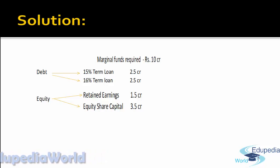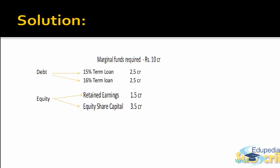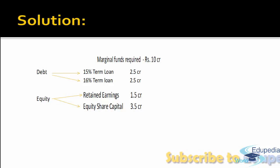Step 2 is to compute the specific cost of capital for each source of finance. Cost of debt 1 (15% term loan) will be 9%. Cost of debt 2, that is the 16% term loan, will be 9.6%. Retained earnings cost is 16%, and cost of equity is 18.25%. So which source are you going to utilize first? The cheapest one — 9%. How much is available at that cost? 2.5 CR. But there is one more condition: you have to maintain the target capital structure, that is 50% equity and 50% debt.